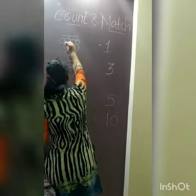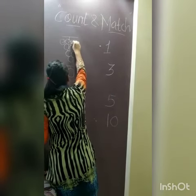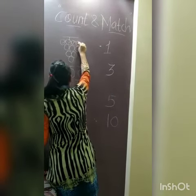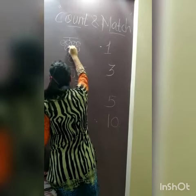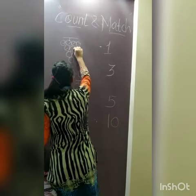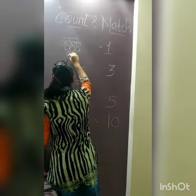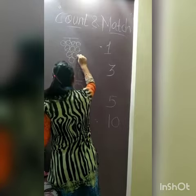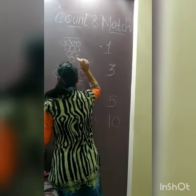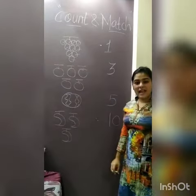Count with me. 1, 2, 3, 4, 5, 6, 7, 8, 9, 10. 10.